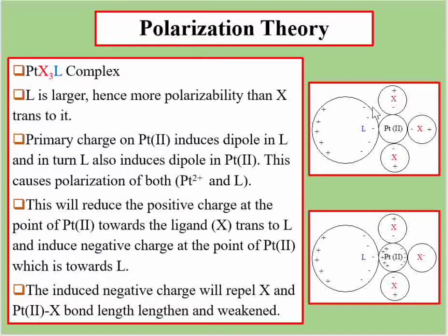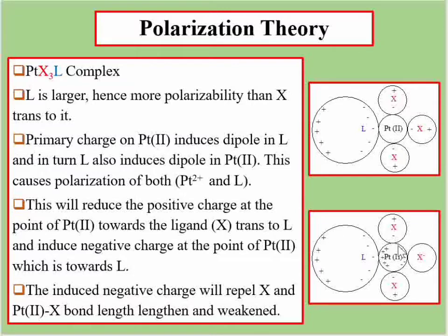When the dipole is induced, here is a minus charge just on the platinum side, and since platinum is positively charged, the negative charge accumulates toward platinum. Then on the other side, positive charge will accumulate. So a dipole is created. This means L induces a dipole in platinum, and this also induces a dipole in platinum — and since its polarizability is very large, L has also induced a dipole in platinum.